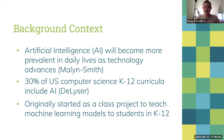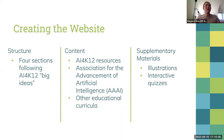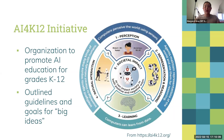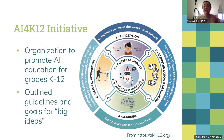The AI4K12 initiative — Artificial Intelligence for K-12 — is an organization that promotes AI education for grades K-12. They outline five big ideas: Perception (how computers perceive the world), Representation and Reasoning (how computers create representations of data and use it for decisions), Learning (how computers learn from data), Natural Interaction (how computers interact with humans), and Societal Impact (how AI affects society in positive and negative ways).